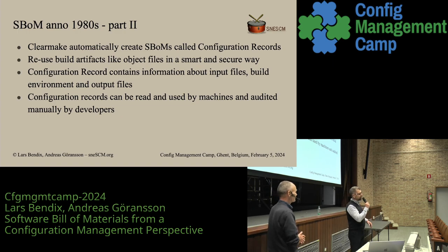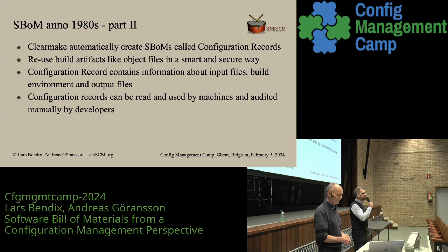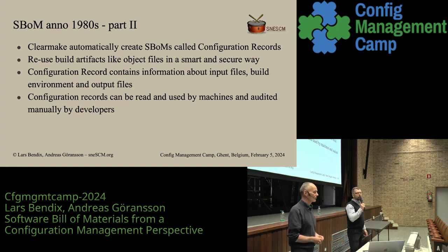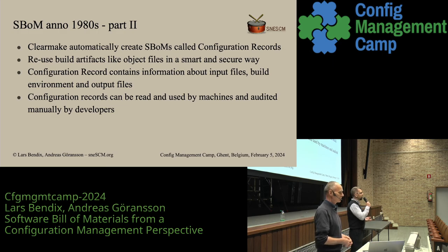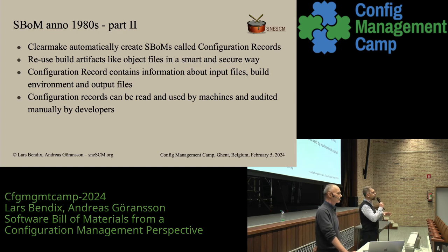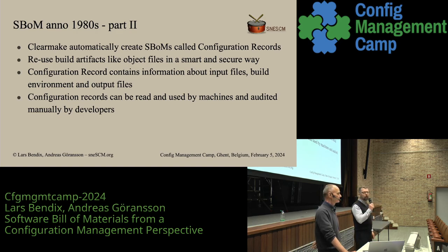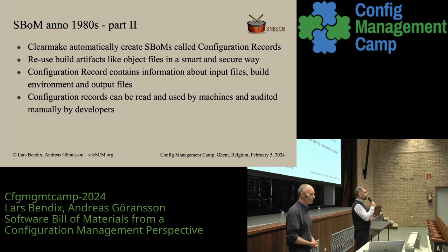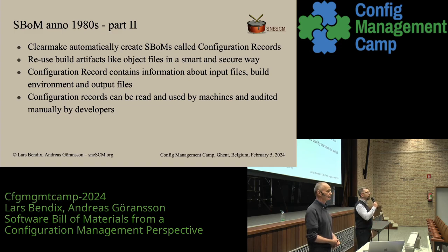Back in the 80s and early 90s, when our favorite tool was ClearCase and all those tools in that toolset, ClearMake automatically created software bill of materials during build time. This was to be able to reuse built code in an efficient and secure way, to reduce build times, and to know what we actually built. Those configuration records contained information about what went into the build, the parameters that built the software, and also the outputs, so it knew whether you could reuse it or had to rebuild. The configuration records were machine-readable, and you could also query them manually from the command line to get information about how these binaries and object files were built.